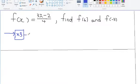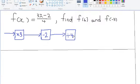After multiplying by 3, what is the second thing that is done to x? The second thing that is done is we subtract 2. And after subtracting 2, what is the last thing that is done? The last thing is that we divide by 4, and we have our final output.